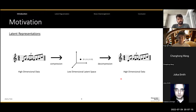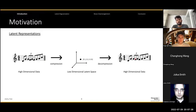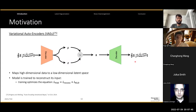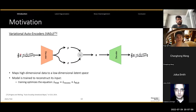To address these challenges regarding control and interactivity, I specifically look at latent representation-based models where we are trying to compress high-dimensional data into a low-dimensional latent space and then decompress it back. The idea is that during this compression process, the latent representations can end up encoding certain hidden attributes of the data. One of the generative models which forms the basis of most of my research is the variational autoencoder, or VAE. This model comprises of an encoder, which is a neural network that maps measures of music into a low-dimensional latent space.